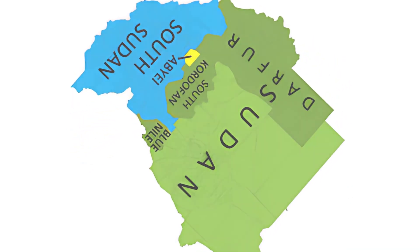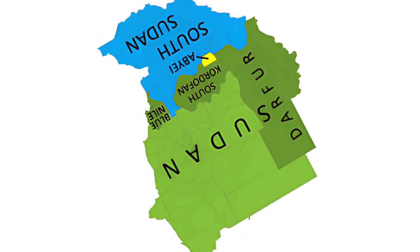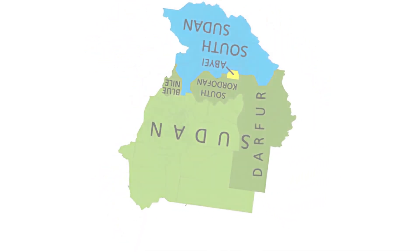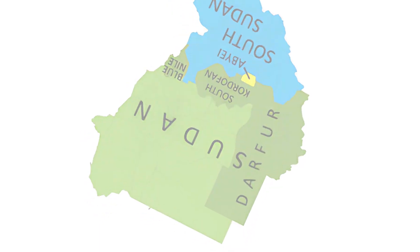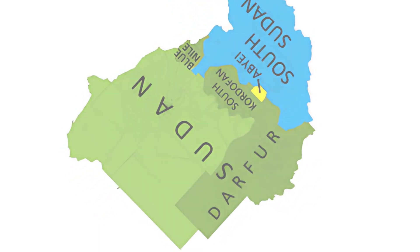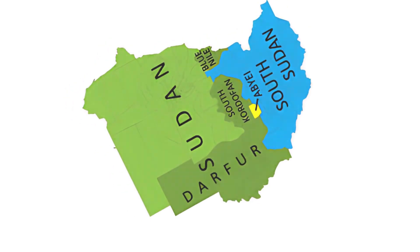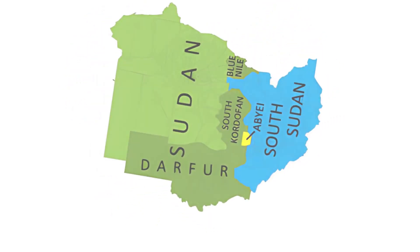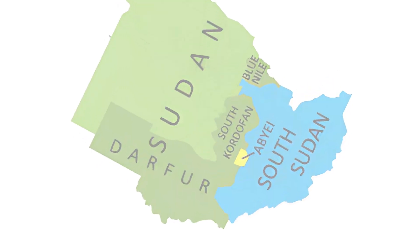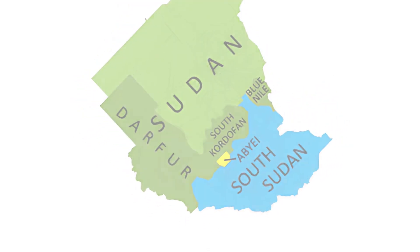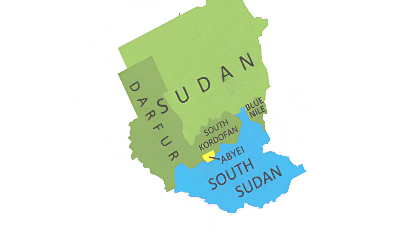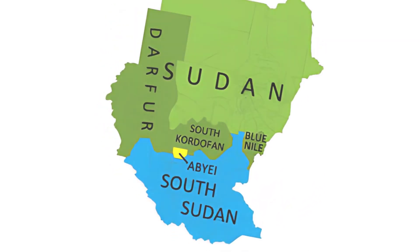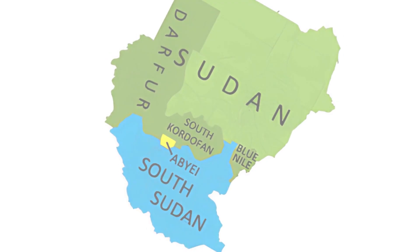Civil war: decades of marginalization and neglect fueled armed resistance and rebellion in the South, leading to the outbreak of the Second Sudanese Civil War in 1983. The conflict pitted the Sudanese government, led by President Jaafar Nimeiri and later Omar al-Bashir, against the Sudan People's Liberation Movement/Army (SPLM/A), a rebel group fighting for autonomy and equality for the people of South Sudan.